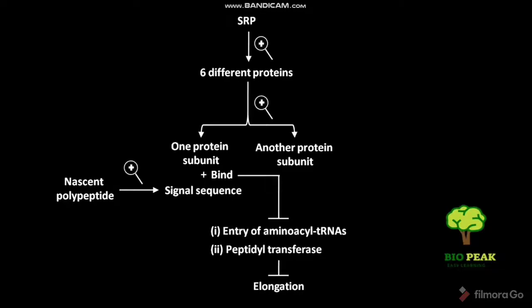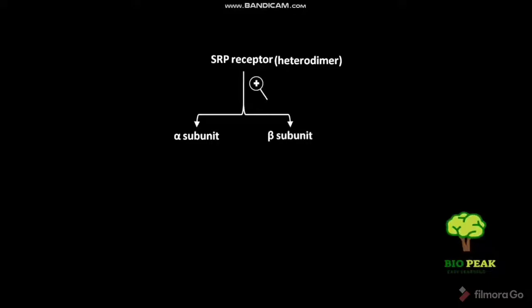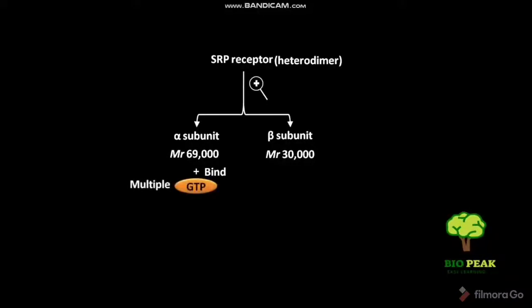Another protein subunit out of the six different proteins of SRP binds to GTP. The bound GTP then undergoes hydrolysis to produce GDP and Pi. The SRP receptor contains one alpha subunit and one beta subunit. The relative molecular mass of the alpha subunit is 69,000, and the beta subunit is 30,000. The alpha subunit binds to multiple GTPs, which then undergo hydrolysis to produce GDPs and Pi.